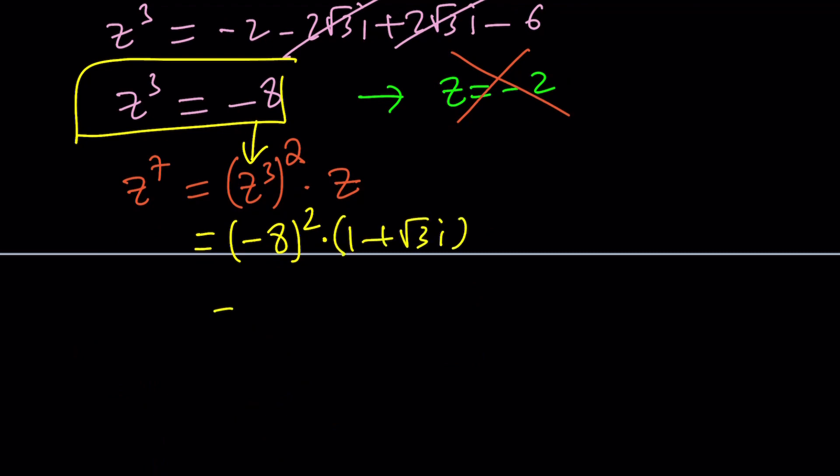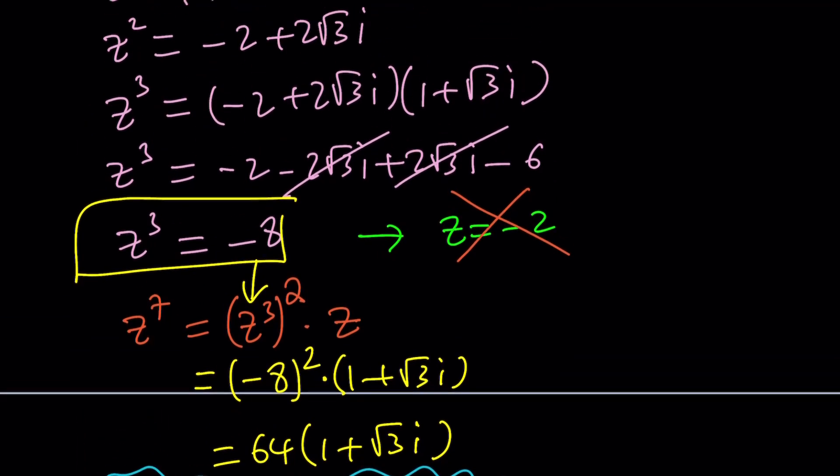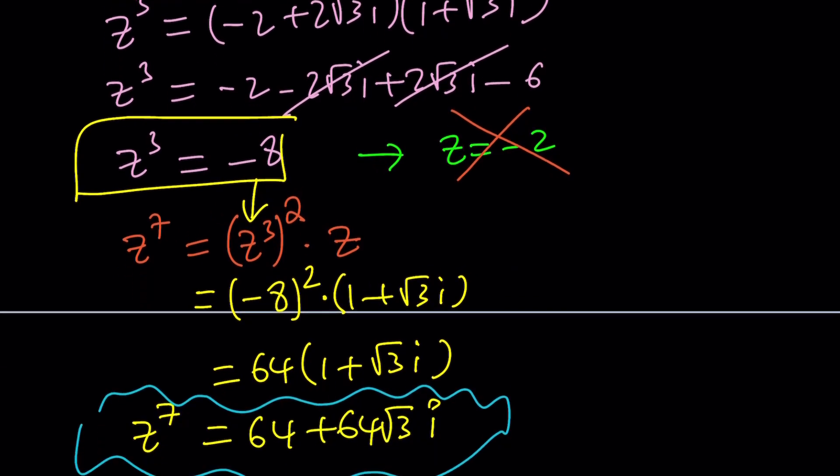But negative eight squared is 64. So you can either write it as 64 times one plus square root of three I or 64 plus 64 root three I. That will be the answer. Make sense? So that's pretty much the second method, kind of like a polynomial, raise Z to different powers until we get something meaningful.